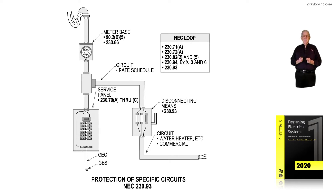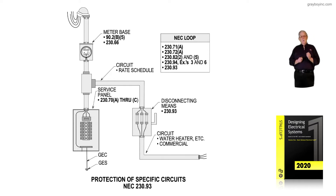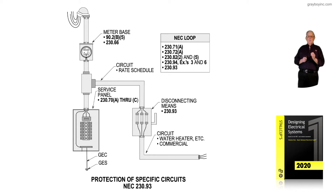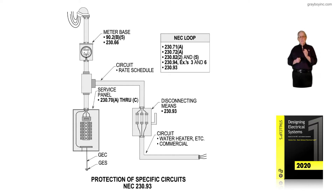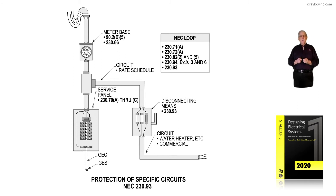This illustration deals with protection of specific circuits in accordance with 230.93. Reviewing that illustration, we're making a tap ahead of the main in the service equipment to the left. By NEC requirements, we would have to review 230.82 and see if one of those permissive taps ahead of the main could be made to supply the disconnecting means tapped ahead of the main, as seen in the illustration.